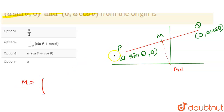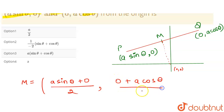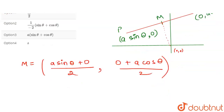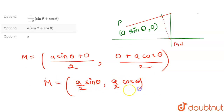Using the midpoint formula, the x-coordinate of M is (a sinθ + 0) / 2 = a sinθ / 2, and the y-coordinate of M is (0 + a cosθ) / 2 = a cosθ / 2. So the coordinates of M are (a/2 sinθ, a/2 cosθ).